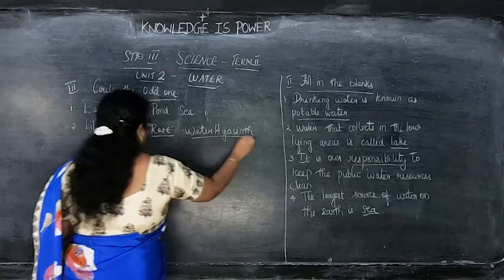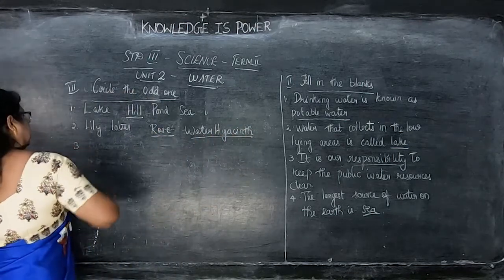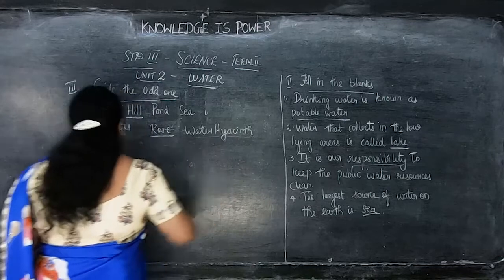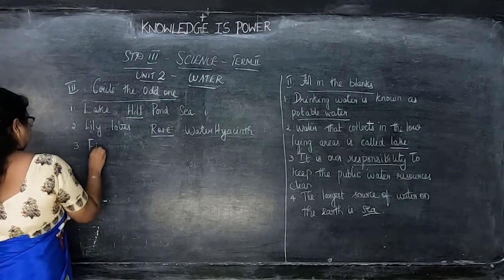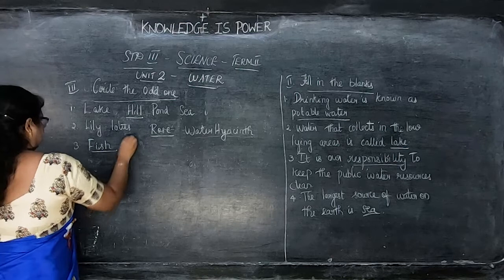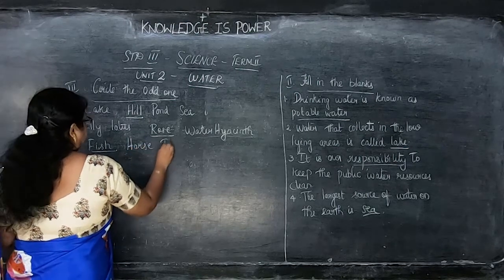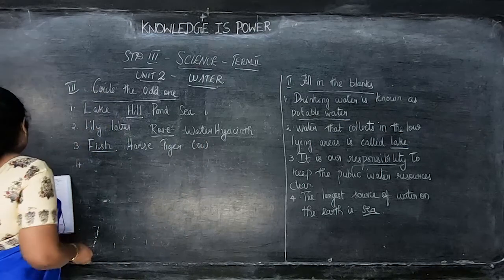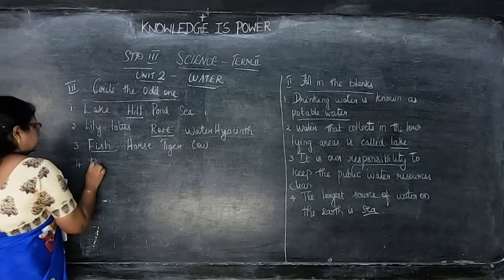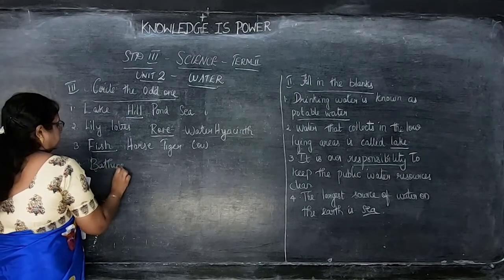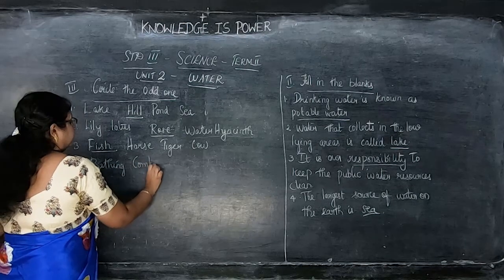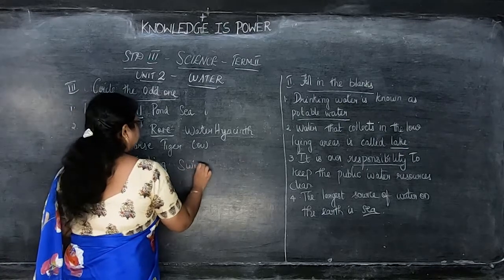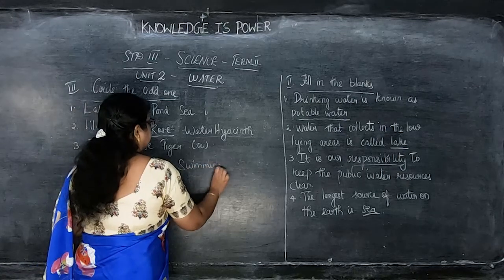Third set: fish, horse, tiger, cow — circle the odd one. Fourth set: water, bathing, combing, swimming, washing — circle the odd one.